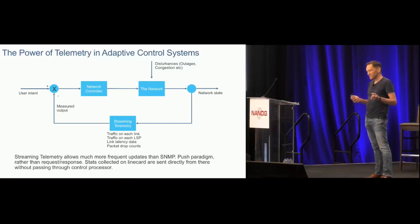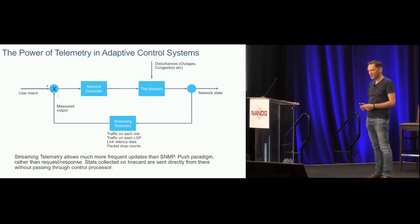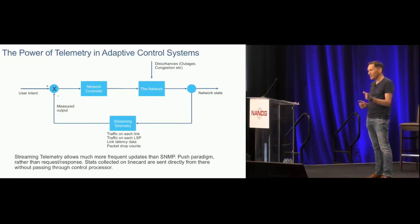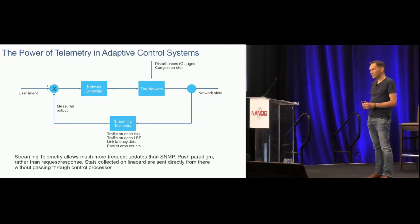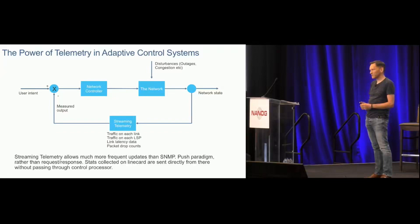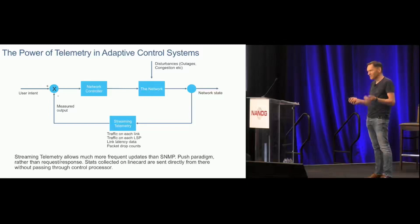That's where telemetry plays a very important part. By providing telemetry — such as what is the traffic on each physical link, what traffic is travelling along each traffic-engineered LSP, what is the latency of each link, what are packet drop counts on each link — coupled with protocol information, the controller has good visibility of what's going on. That comprises the feedback part of this control loop, taken into account when doing path computation. This is a classical control system applied to networking.